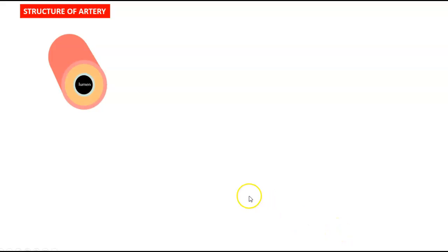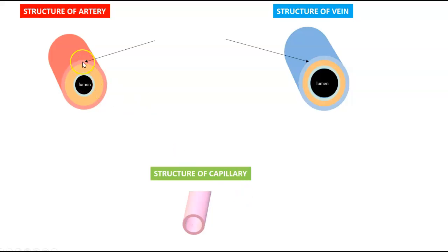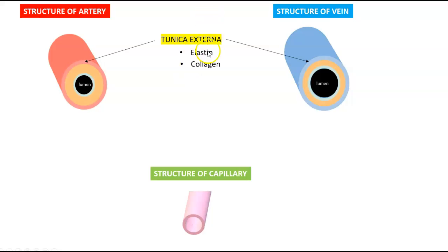Now let's look at the structure of the artery, vein, and capillaries. When we look at the outermost layer of the artery and the vein first, these are made up of a layer called the tunica externa or tunica adventacea. They are made up of elastin and collagen, which provides support and structure to the artery and the vein, arranged in concentric patterns on both of them.